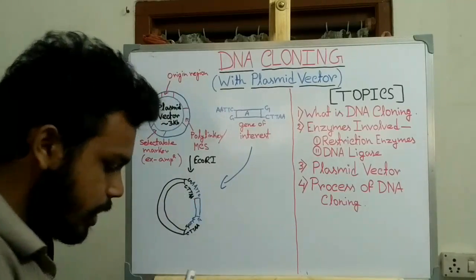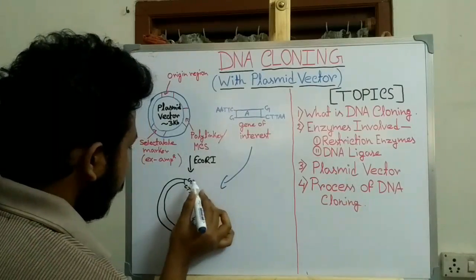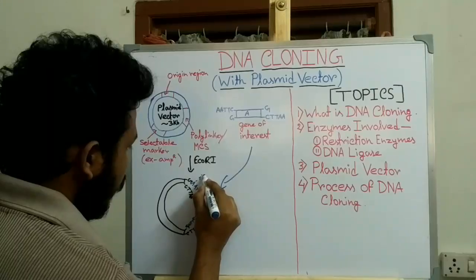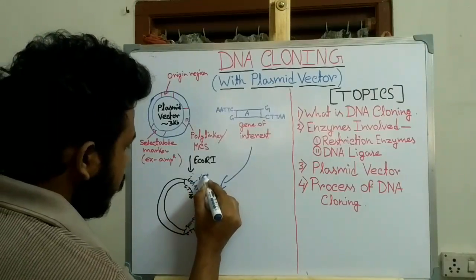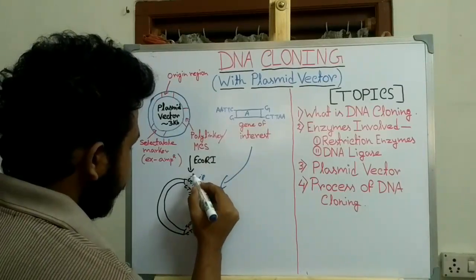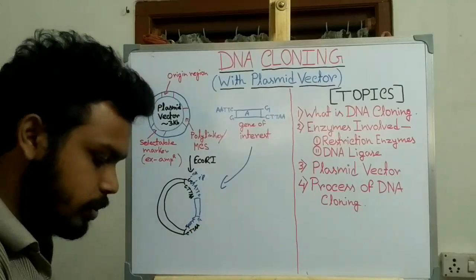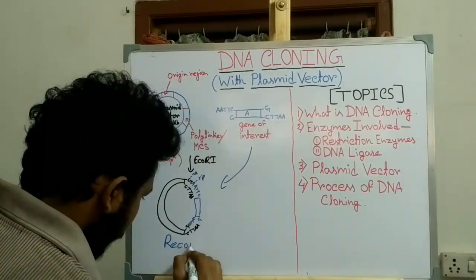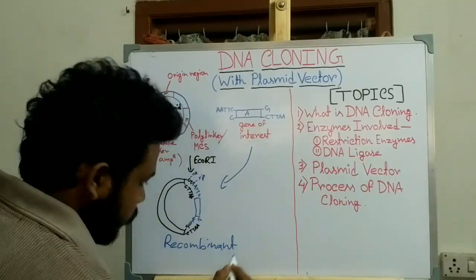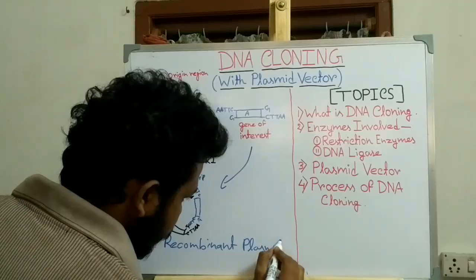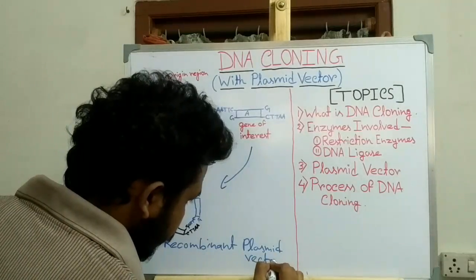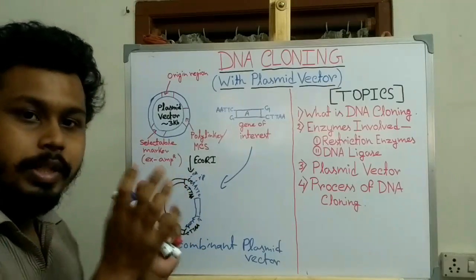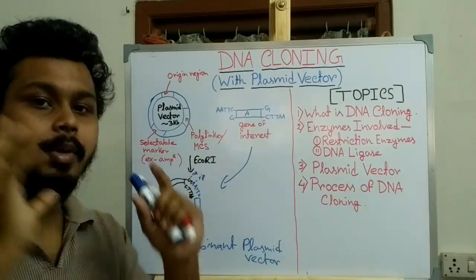Here we add DNA ligase. DNA ligase will create a phosphodiester bond between the 5' OH group and the 5' phosphate group, sealing the nicks and joining the fragments. This produces what is known as a recombinant plasmid vector containing the gene of interest. It is called recombinant DNA because it contains two different fragments of DNA that come from different sources.